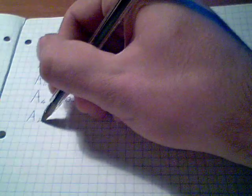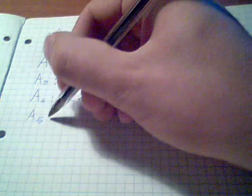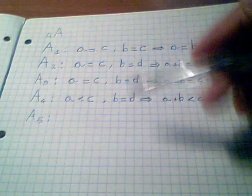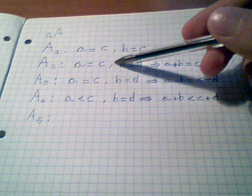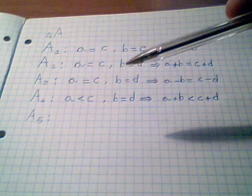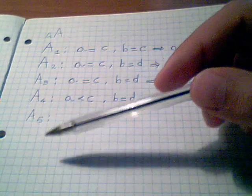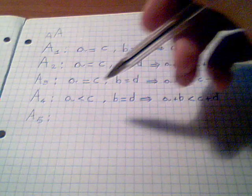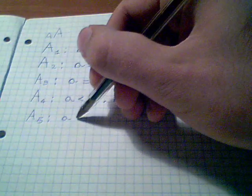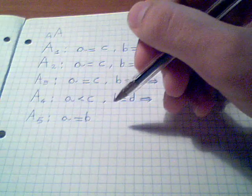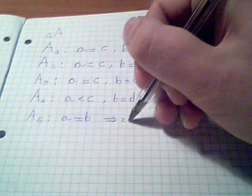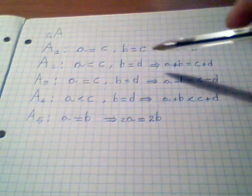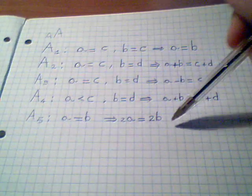Axiom number 5 is a quite non-standard axiom, because it's not an independent one. It can be demonstrated from the second one. In fact, very probably, the fifth axiom isn't Euclid's one, but someone else wrote it after Euclid. It says that if A is equal to B, then 2A, the double of A, will be equal to the double of B. If two things are equal to each other, the double of two things will be equal to each other.